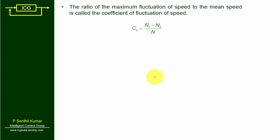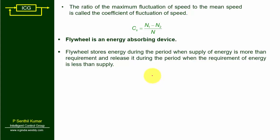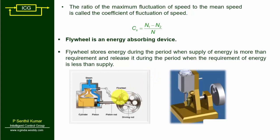There is a constant in the turning moment diagram called Cs — the coefficient of fluctuation of speed — which is the ratio of maximum fluctuation of speed to mean speed. A flywheel is an energy-absorbing device: it stores energy during the period when supply exceeds requirement, and releases energy when requirement exceeds supply. Examples include a flywheel attached to a steam engine and a flywheel with an IC engine piston arrangement.